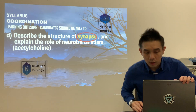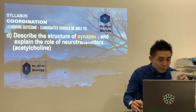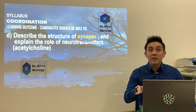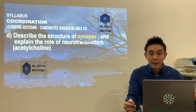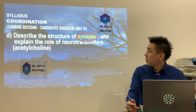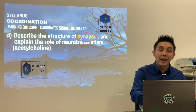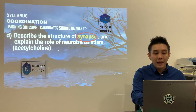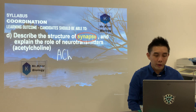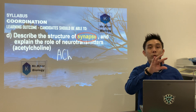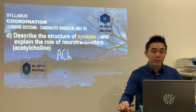Straight to the point — we are looking at synapse. In this particular subtopic we will be seeing something called neurotransmitter. The neurotransmitter involved in synapse is called acetylcholine. In the A2 exam you can write ACh — the marking scheme does accept this abbreviation.